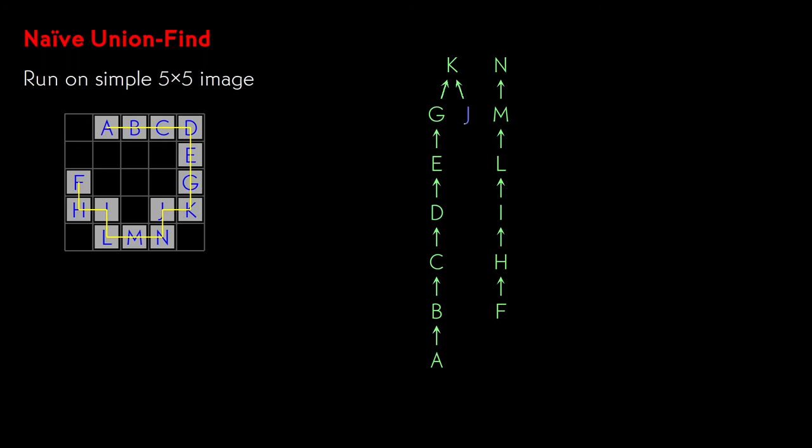Now we can enumerate the components by running find on each pixel in turn using the representatives as keys in a hash table. In this loop, we can accumulate any descriptive statistics that we please about the pixels, so we could further classify regions by area, density, circularity, or whatever properties we like.